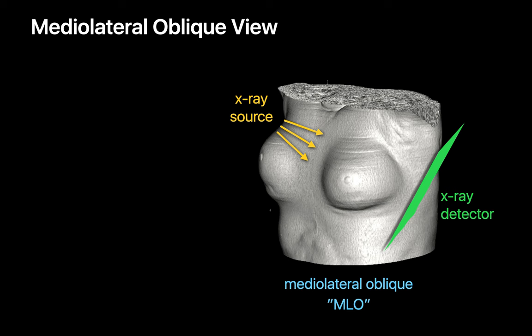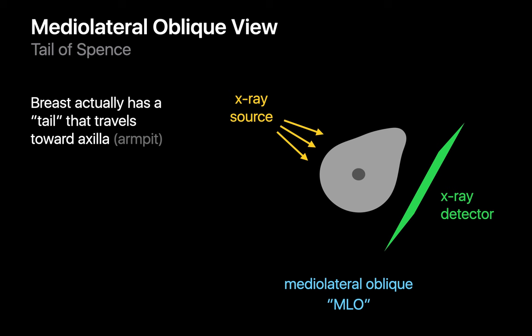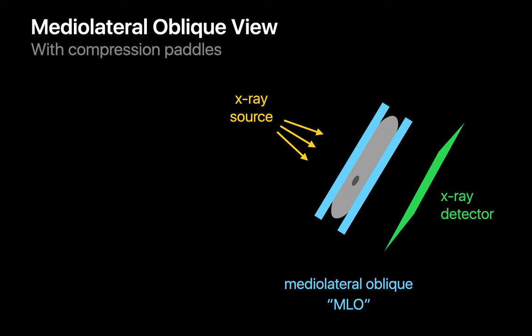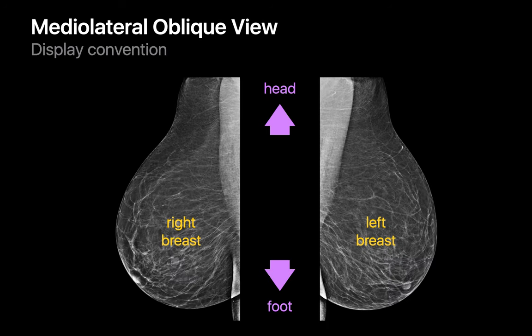Let's move on to the medial lateral oblique, or MLO, view. When we look at a breast from the front, it's important to understand that the breast is not circular — it's actually shaped more like this, with a tail that points towards the armpit. The tail of the breast in the breast's upper outer quadrant also happens to be a common site where breast cancers occur. Compressing the breast in an MLO orientation gives us a much better chance at inspecting the tail of the breast than if we were to use a true medial lateral, or ML, orientation. If we tried to compress the breast in a true ML view orthogonal to the CC view, we would not be able to compress the tail of the breast and inspect it well. When displaying MLO mammograms of both breasts, the upper portion is at the top, the lower portion is at the bottom, and the nipples point away from each other.